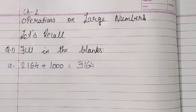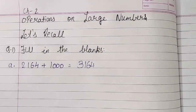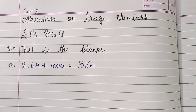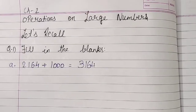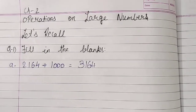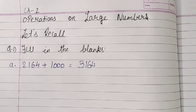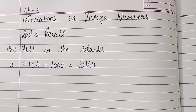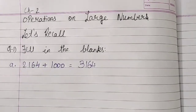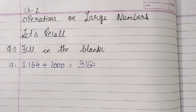Students, if we add any number with 0, the answer is the number itself. For example, 0 plus 4 is 4. So 2,164 plus 1,000 is 3,164. Understood?